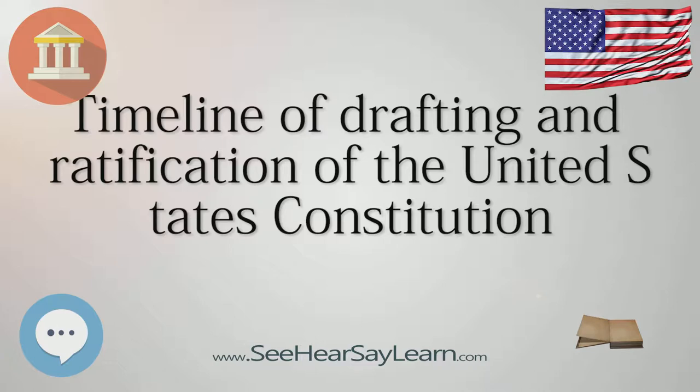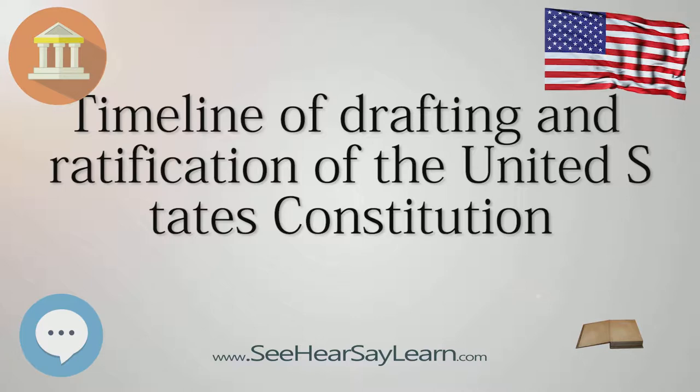The timeline concludes with the unique ratification vote of Vermont, which at the time was a sovereign state outside the Union. The time span covered is five years, nine months, from March 25, 1785 to January 10, 1791.